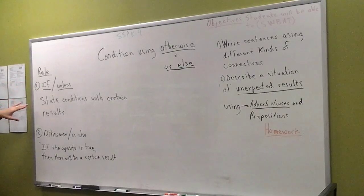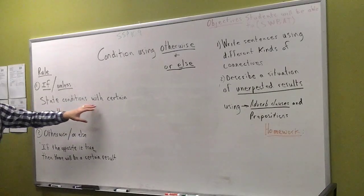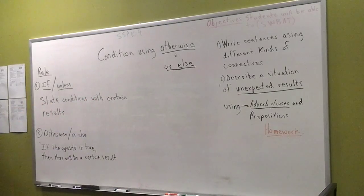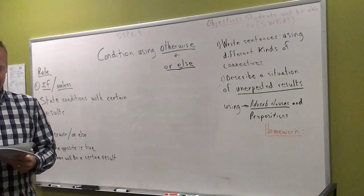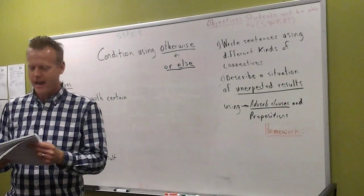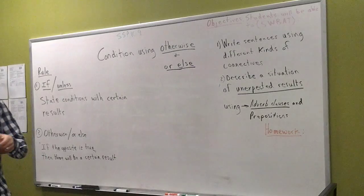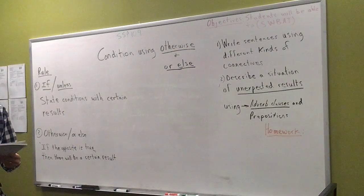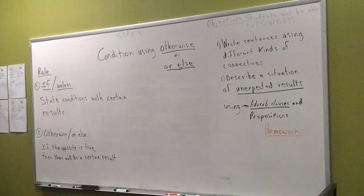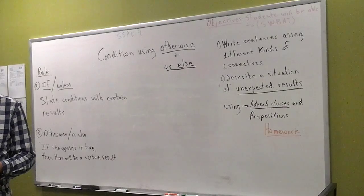We're stating conditions with certain results. So let's see. Mohammed in the back, will you read example number A? Good. So listen, that's a certain result. It's gonna happen. If I don't eat breakfast, guess what? Hundred percent, I'm gonna be hungry. So that's what they need: certain results.